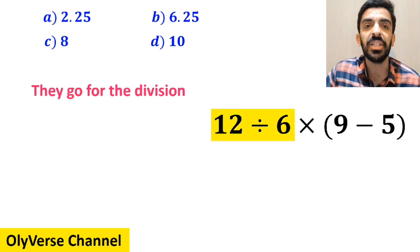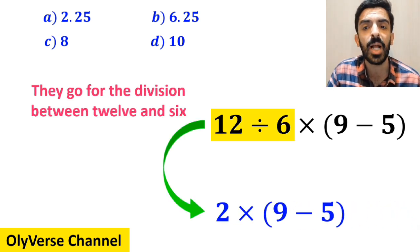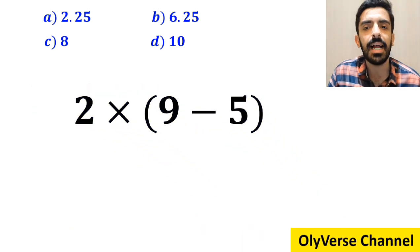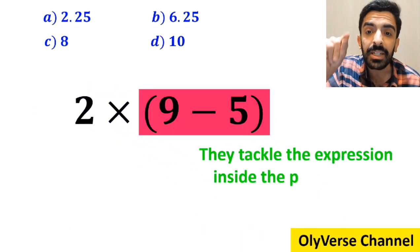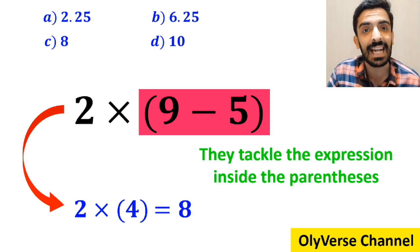In the next step, they go for the division between 12 and 6, and this expression simplifies to 2 multiplied by (9 minus 5). In the final step, they tackle the expression inside the parenthesis and write it as 2 times 4, which ultimately gives them the answer 8.